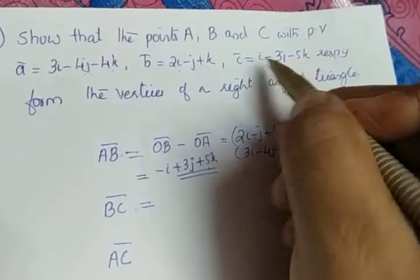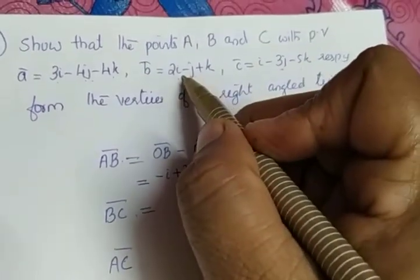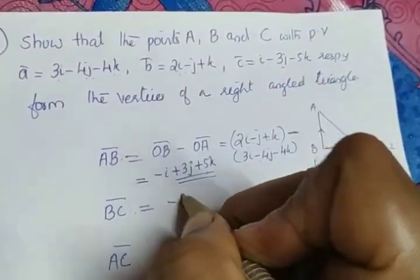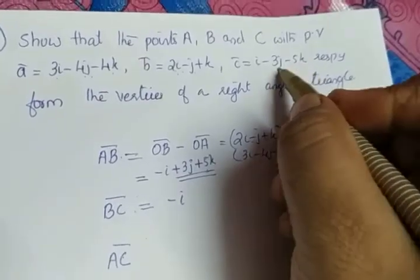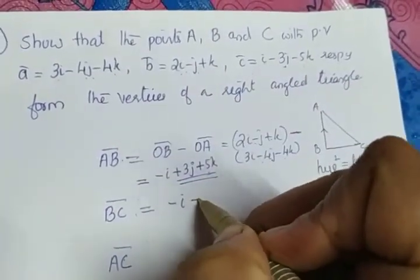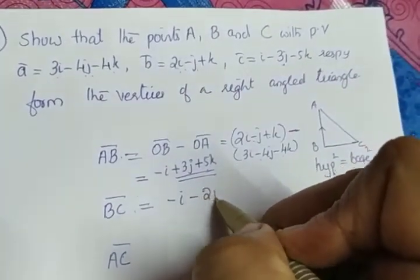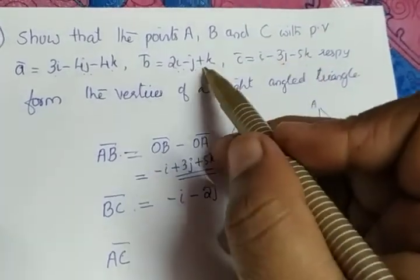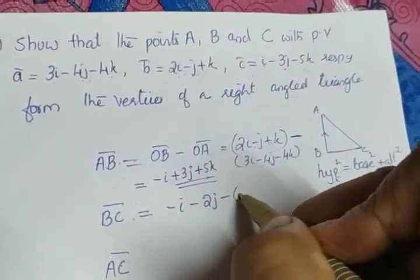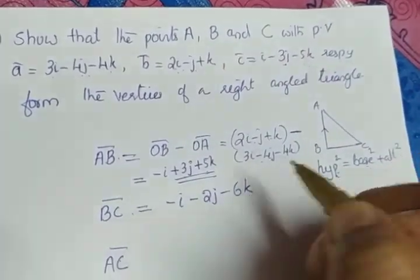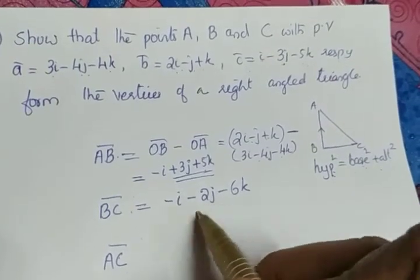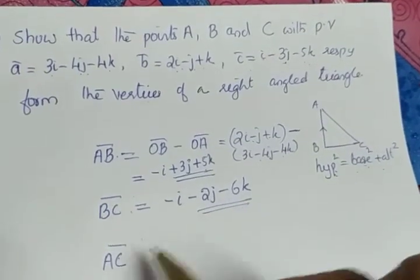Vector BC is position vector of C minus position vector of B. i minus 2i gives minus i, minus 3j minus minus j gives minus 2j, and minus 5k minus k gives minus 6k. So vector BC is equal to minus i minus 2j minus 6k.